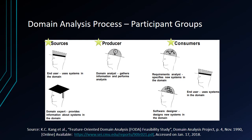This diagram demonstrates the different participating groups of the domain analysis process. The first are the sources — we could go with end users and domain experts to question, survey, and analyze their information. We also have domain producers, and we can gather information and perform an analysis with them. Additionally, we have customers, requirements analysts, end users, and software designers. In a real-world application of domain analysis, the same users may be used for the different participating groups.